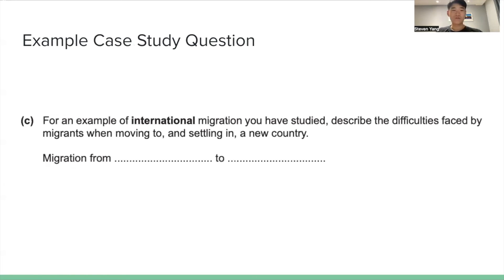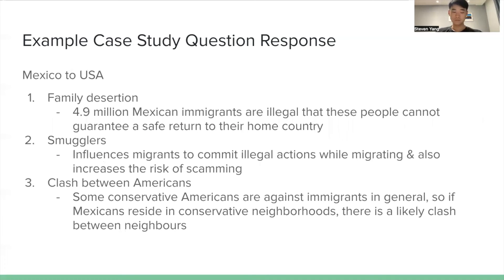Here is an example of case study questions about international migration. I would like you to pause the video and use this case study and the ideas you've learned, along with background knowledge, to try making three developed points. The first point is family desertion: about 4.9 million Mexican immigrants are illegal, meaning these people cannot guarantee a safe return to Mexico. This is tragic because family is very important, and if they cannot meet their family forever, this is a very depressing negative impact.